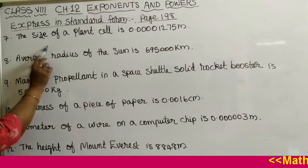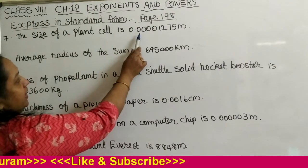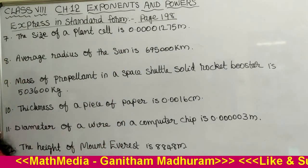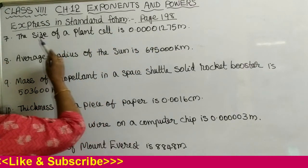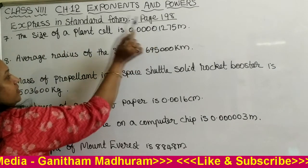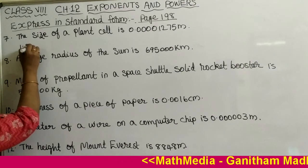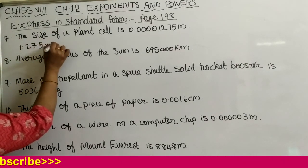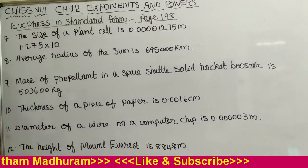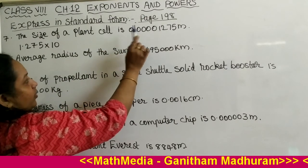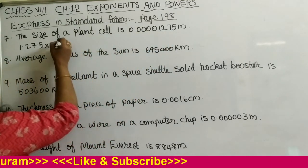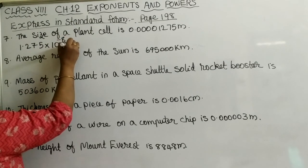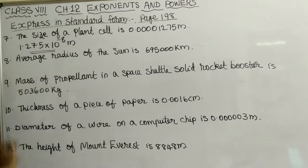Next is question number 7. The size of a plant cell is 0.00000001275 meters. The first non-zero digit is 1, so we put the decimal point after it: 1.275 into 10 raised to some power. It is a decimal number, so after the decimal point we count the digits: 1, 2, 3, 4, 5, 6, 7, 8 — there are 8 digits. So we write minus 8. The answer is 1.275 into 10 raised to minus 8 meters.